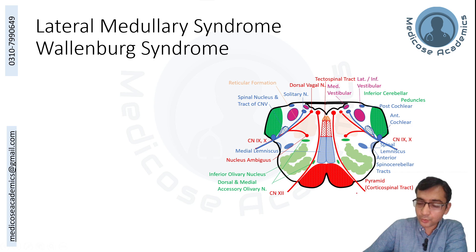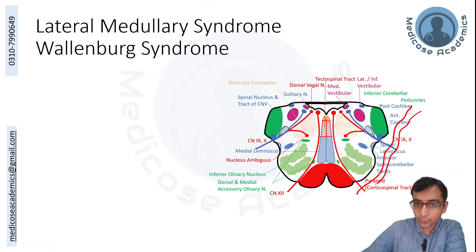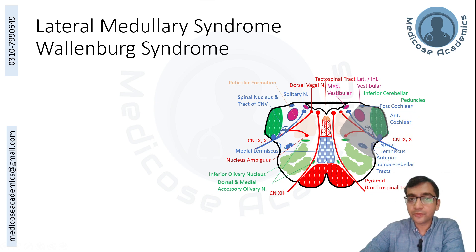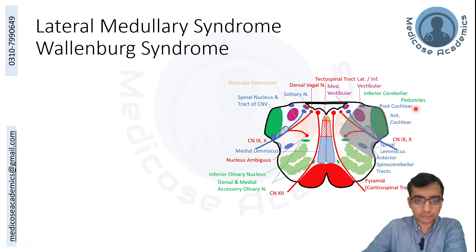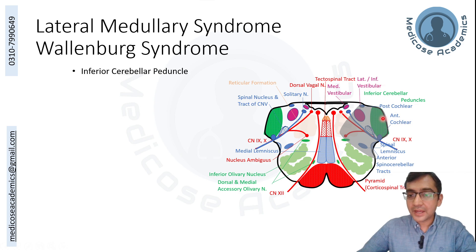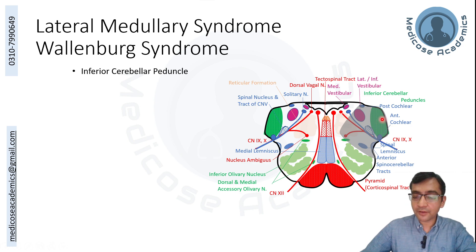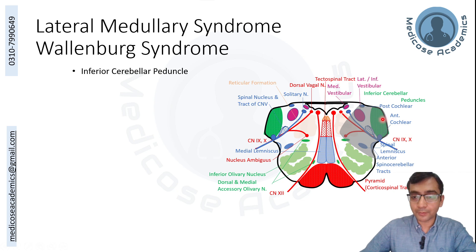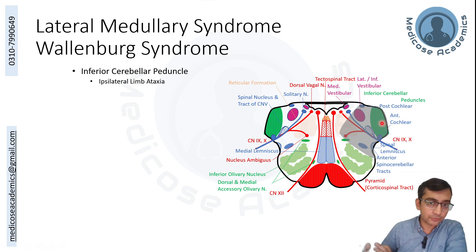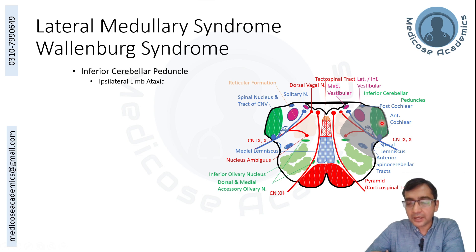In lateral medullary syndrome (Wallenberg syndrome), the vertebral artery gives rise to the posterior inferior cerebellar artery (PICA), which supplies the lateral aspect of the medulla oblongata and the inferior surface of the cerebellum. If this artery is affected, the inferior cerebellar peduncle is damaged — signals to the cerebellum are disrupted, causing loss of balance, abnormal gait (ataxia), and the person walks like a drunken individual.